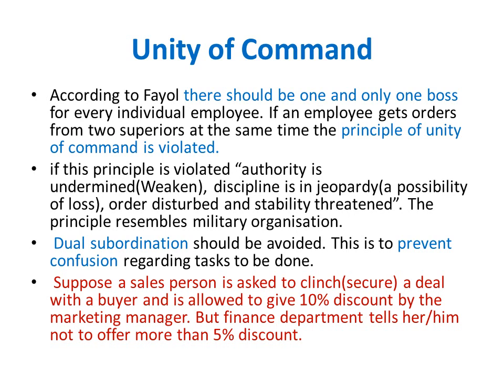Remember the principle of unity of command: one subordinate should be given orders by one and only one superior. This contrasts with the principle of functional foremanship given by F.W. Taylor, who says that a worker should be commanded by 8 bosses, as demanded by the situation. Do you remember how the worker was instructed by 8 bosses?